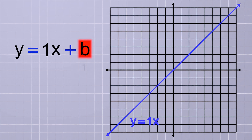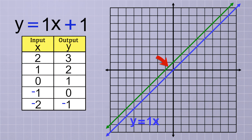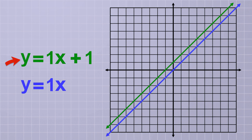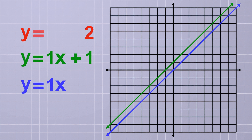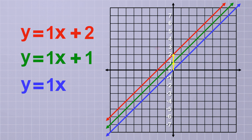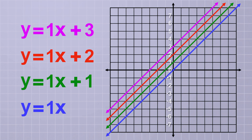Starting with b equals 1 gives us y equals 1x plus 1. When we graph it, the line is parallel to the reference line — and that makes sense because m equals 1 in both equations, so the slope is the same. What's different is that b equals positive 1 shifted the entire line up on the coordinate plane by 1 unit. Now the line passes through positive 1 on the y-axis instead of 0. Choosing b equals positive 2 shifts it up 2 units, passing through the y-axis at positive 2. And b equals 3 intercepts the y-axis at y equals 3.